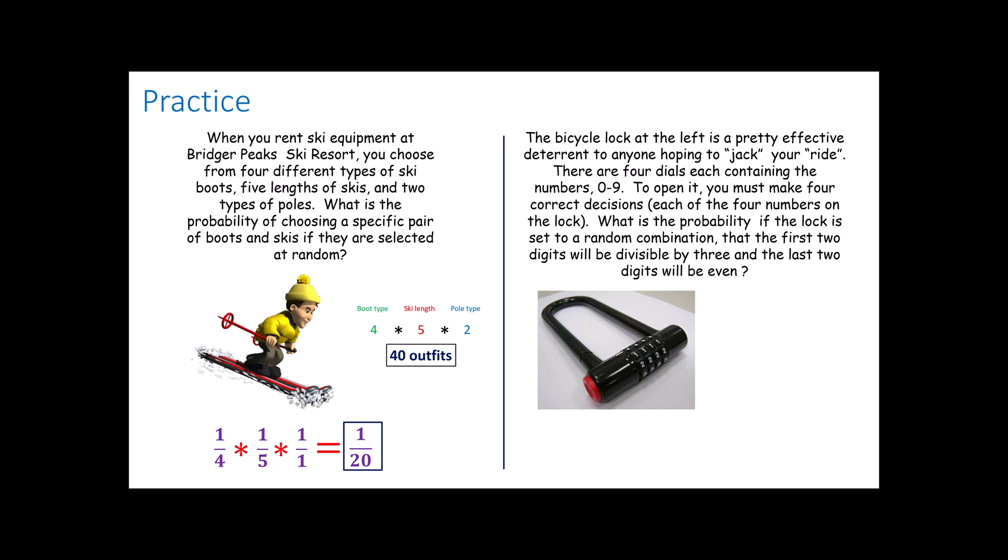One last problem for you. This is one you've seen before as well. The bicycle lock is a pretty effective deterrent to anyone hoping to jack your ride. There are four dials each containing the numbers zero through nine. That's ten different things: one through nine and zero. To open the lock, you must make four correct decisions each of the four numbers on the lock. What is the probability if the lock is set to a random combination that the first two digits will be divisible by three and the last two digits will be even? Remember there are four decisions being made here: the first spinner or dial, the second spinner or dial, the third spinner or dial, and the fourth spinner or dial.